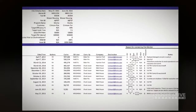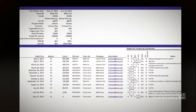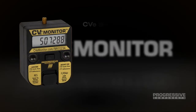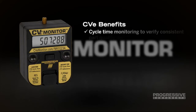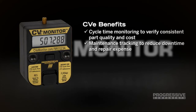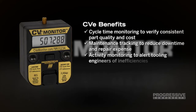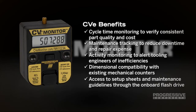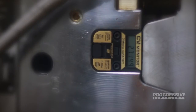Along with the data provided from the performance summary report, CVE on-demand software also creates a report that tracks maintenance and repair activity. Specifying CVE monitoring systems provides cycle time monitoring to verify consistent part quality and cost, maintenance tracking to reduce downtime and repair expense, activity monitoring to alert tooling engineers of inefficiencies, dimensional compatibility with existing mechanical counters, and access to setup sheets and maintenance guidelines through the onboard flash drive.